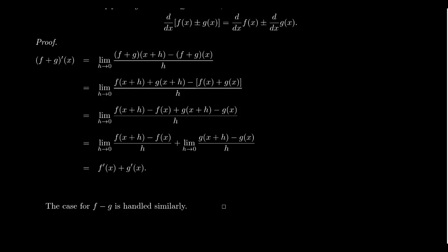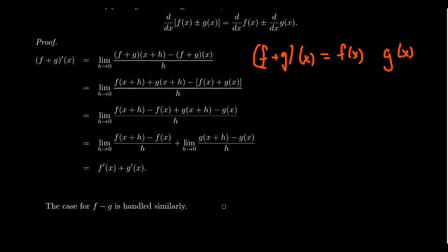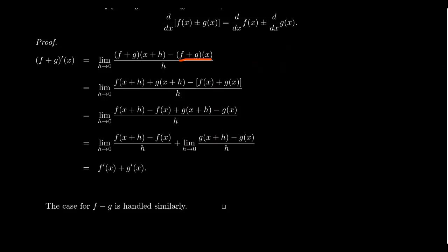By the definition of the derivative, f plus g prime of x is the limit of the difference quotient: f plus g evaluated at x plus h, minus f plus g evaluated at x, all over h. The notation might look like we should foil, but the name of the function is f plus g and the input is x plus h. The function f plus g evaluated at x just means f of x plus g of x, and at x plus h it means f of x plus h plus g of x plus h.